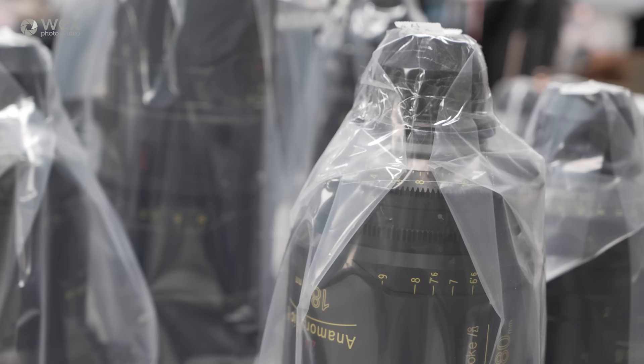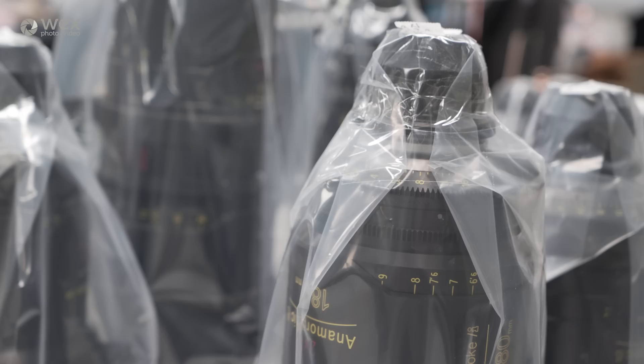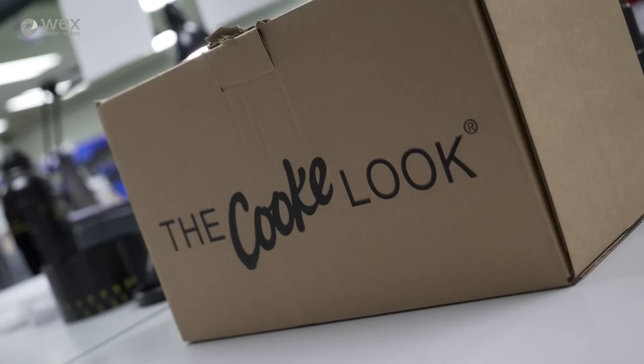After the engraving, the paint on the lenses are done by hand. Once completed, they're all wrapped up and ready to be shipped, and then one lucky filmmaker can be capturing that Cook look.